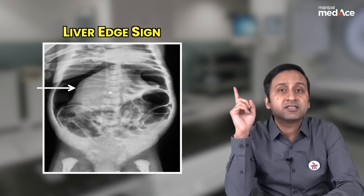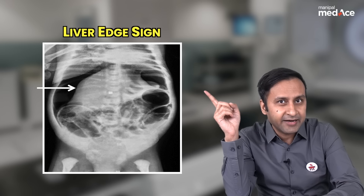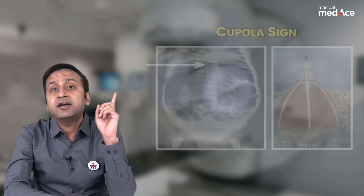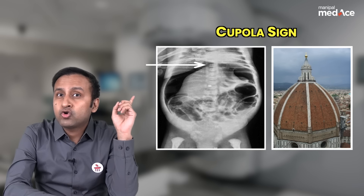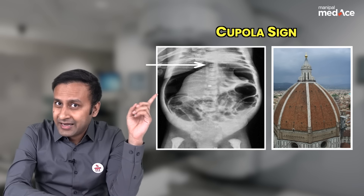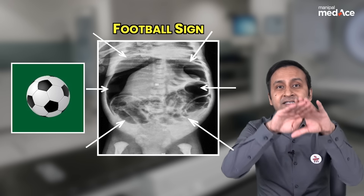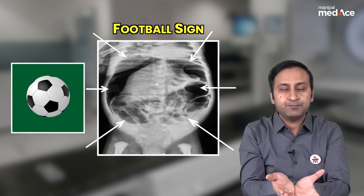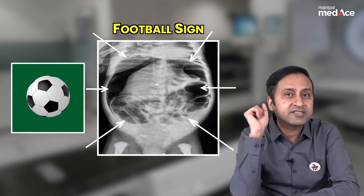Now let us talk about some important signs of pneumoperitoneum on supine abdominal radiograph. Whenever there is pneumoperitoneum, air dissects inside the peritoneal cavity and outlines all the important organs, which will look very bright. If it outlines the surface of the liver, it produces a liverache sign. If it outlines the undersurface of the diaphragm, it produces a cupola-like appearance or cupola sign. If the air dissects inside the entire peritoneal cavity in a circular manner, it forms a football sign.